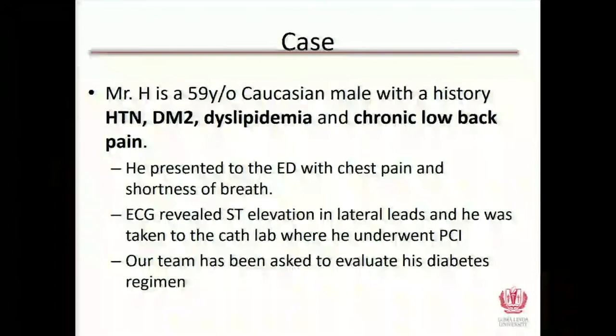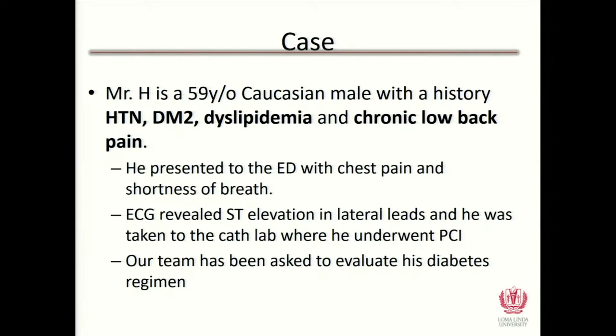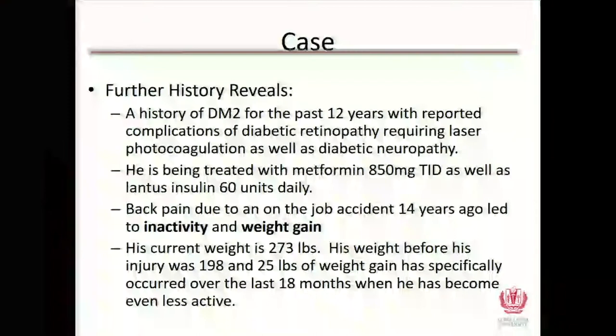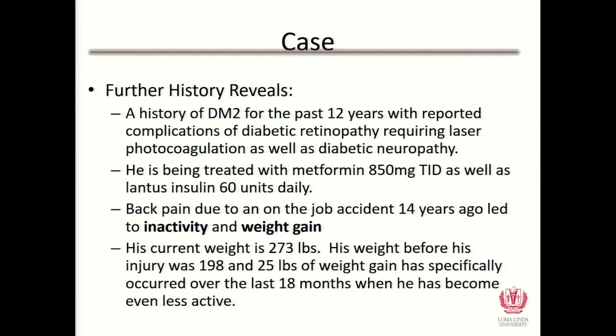Let's start with a case. Mr. H is a 59-year-old Caucasian male with a history of hypertension, type 2 diabetes, dyslipidemia, and chronic low back pain. He presents to the ED with chest pain and shortness of breath. An EKG shows ST elevation in the lateral leads, and he was taken to the cath lab where he underwent PCI. Our team was asked to evaluate his diabetes regimen — this is not an uncommon event in the hospital.